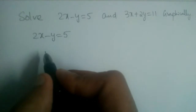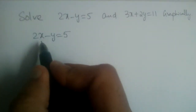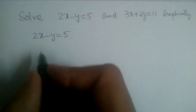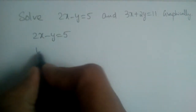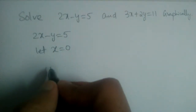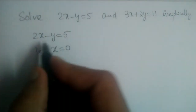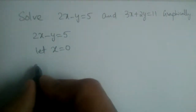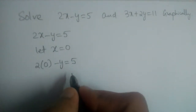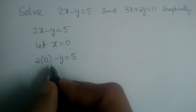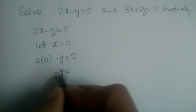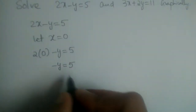We should substitute different values of x one by one. Let us substitute x is equal to 0 first in this equation. So we have 2 into 0 minus y is equal to 5. Since 2 into 0 is 0, we are left with minus y is equal to 5.